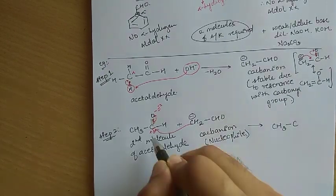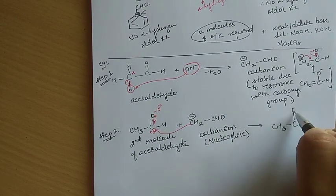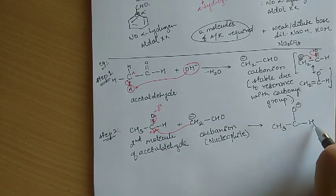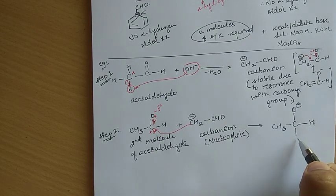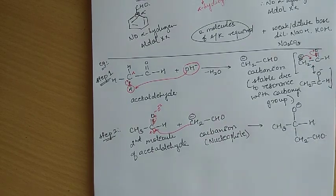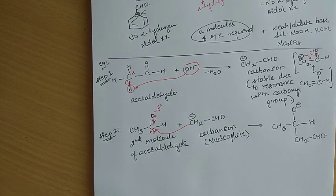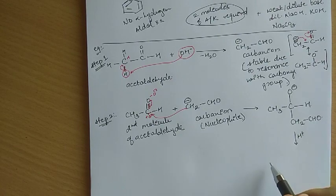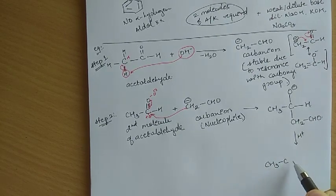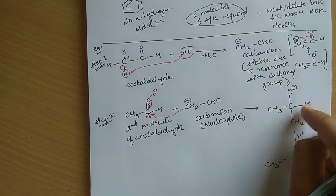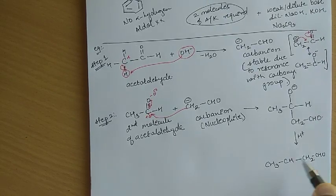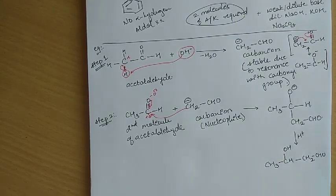After the nucleophilic attack, you get CH3–C with O⁻ on it, bonded to H, and the CH2–CHO group attached. Then adding H⁺, the O⁻ becomes OH. So the intermediate product is CH3–C(OH)(H)–CH2–CHO. This is a beta-hydroxy aldehyde intermediate formed after Step 2.